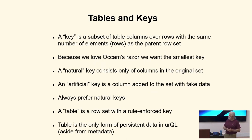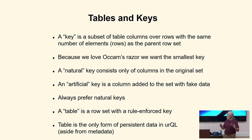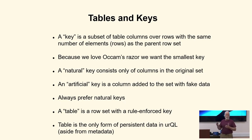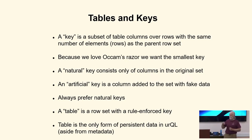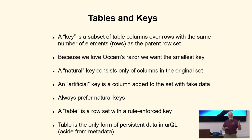A key is a subset of table columns over rows with the same number of elements as the parent. That is a property of keys in relation to the data they are keying. We're looking for a smaller subset where if you reduce that subset of rows, you can't reduce it further. This sets us up for a one-to-one correspondence between keys and rows, which is what we want for indexing. Because we love Occam's razor, we want it to be the smallest one possible.